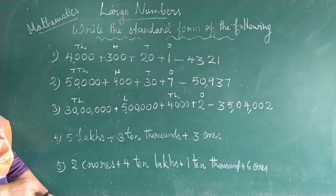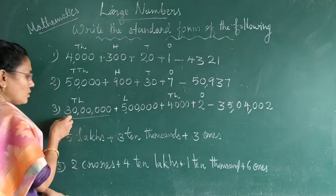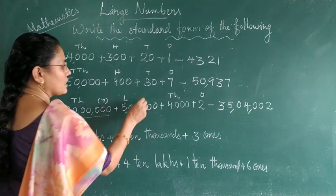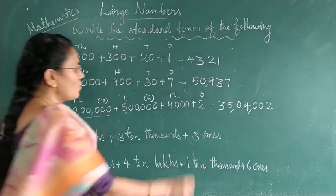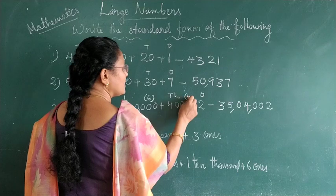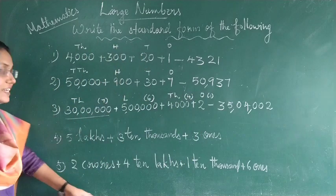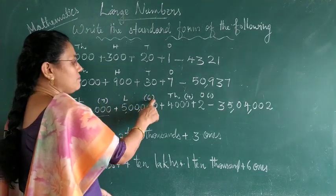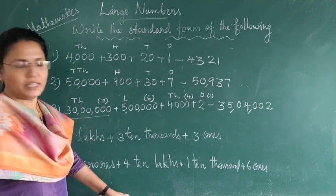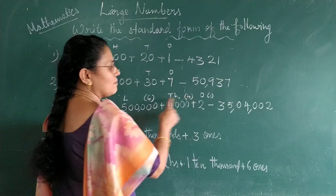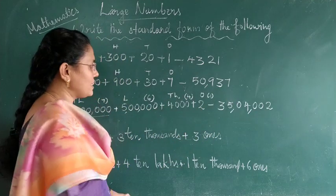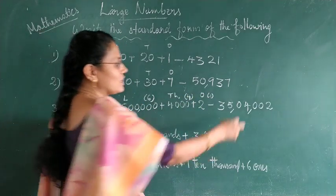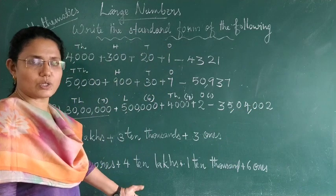There is also an easy method. Write the number and count the number of digits in each term. 30 lakhs is a 7-digit number, 5 lakhs is a 6-digit number, 4,000 is a 4-digit number, and 2 is a 1-digit number. In between the 7-digit and 6-digit numbers, the 5-digit number is not given — but it is not missing here. Between the 6-digit and 4-digit numbers, the 5-digit number is not there, so write a 0. Between the 4-digit and 1-digit numbers, the 3-digit and 2-digit numbers are not given, so write zeroes there. You can also follow this method.